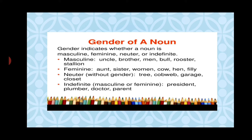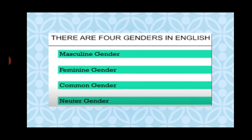Indefinite or common gender can be masculine or feminine. For example, president can be a lady or a male; plumber can be a lady or a man; doctor and parent are the same. These are examples of common or indefinite gender. There are four genders in English: masculine gender, feminine gender, common gender, and neuter gender.